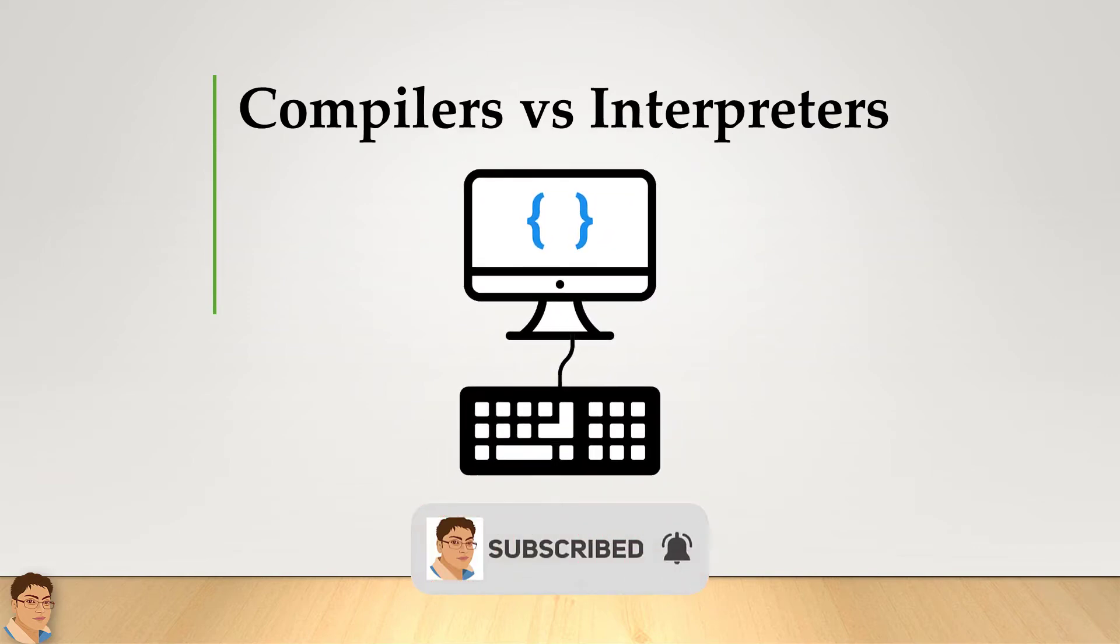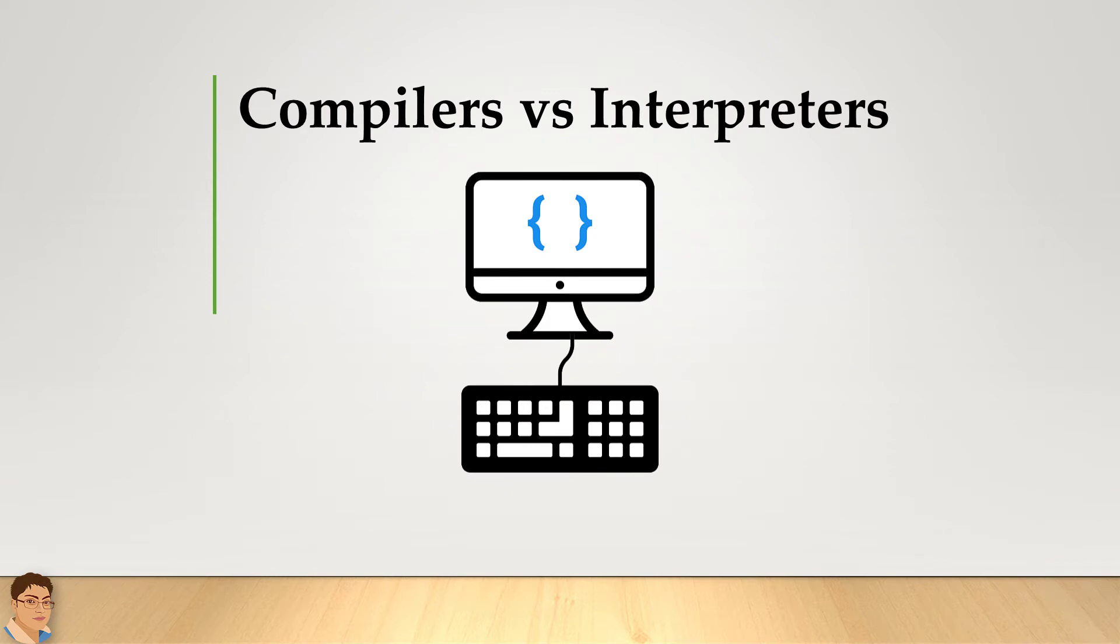We generally write a computer program using a high-level language. A high-level language is one that is more understandable by us, humans. But a computer does not understand high-level language. It only understands the program written in 0s and 1s, in binary, called the machine code.